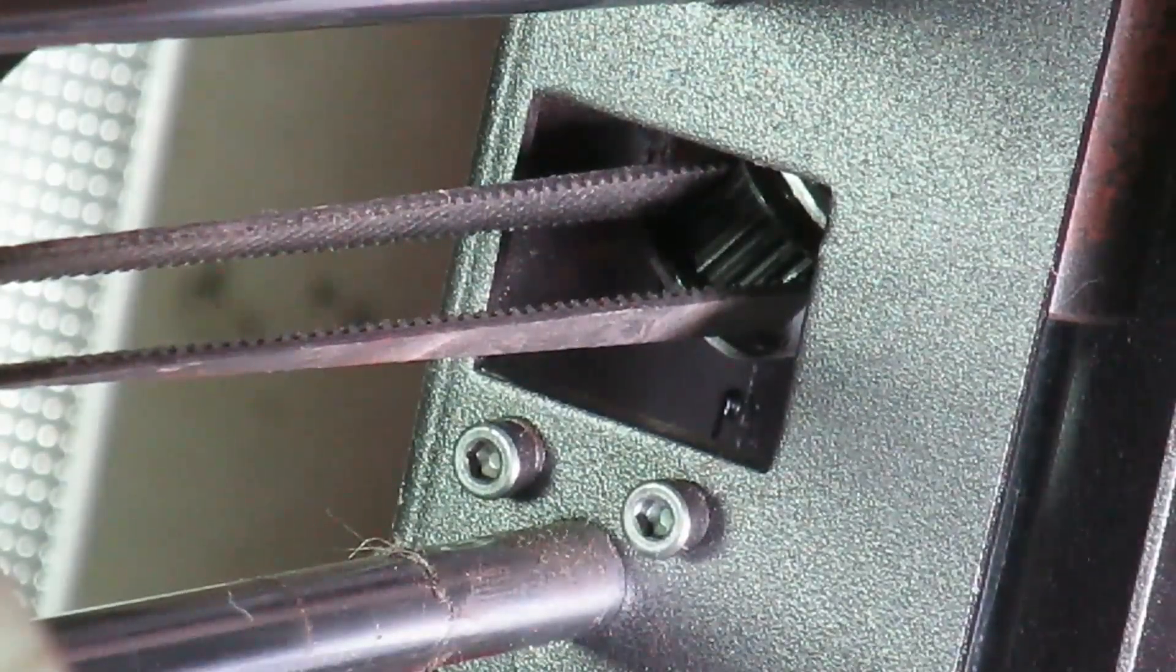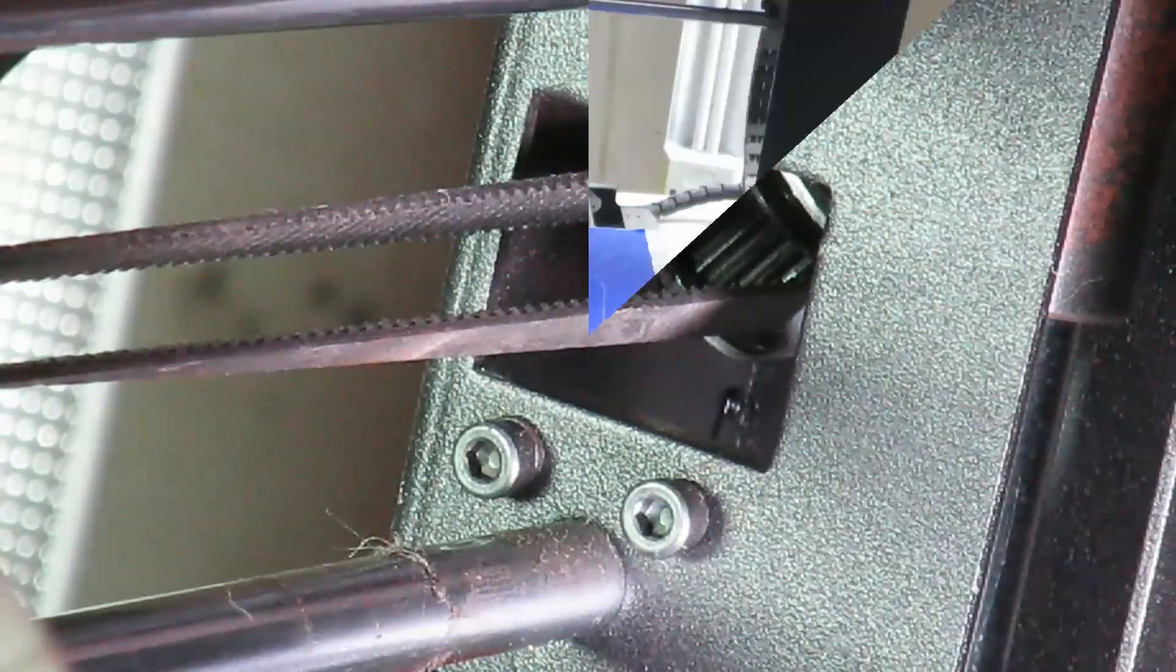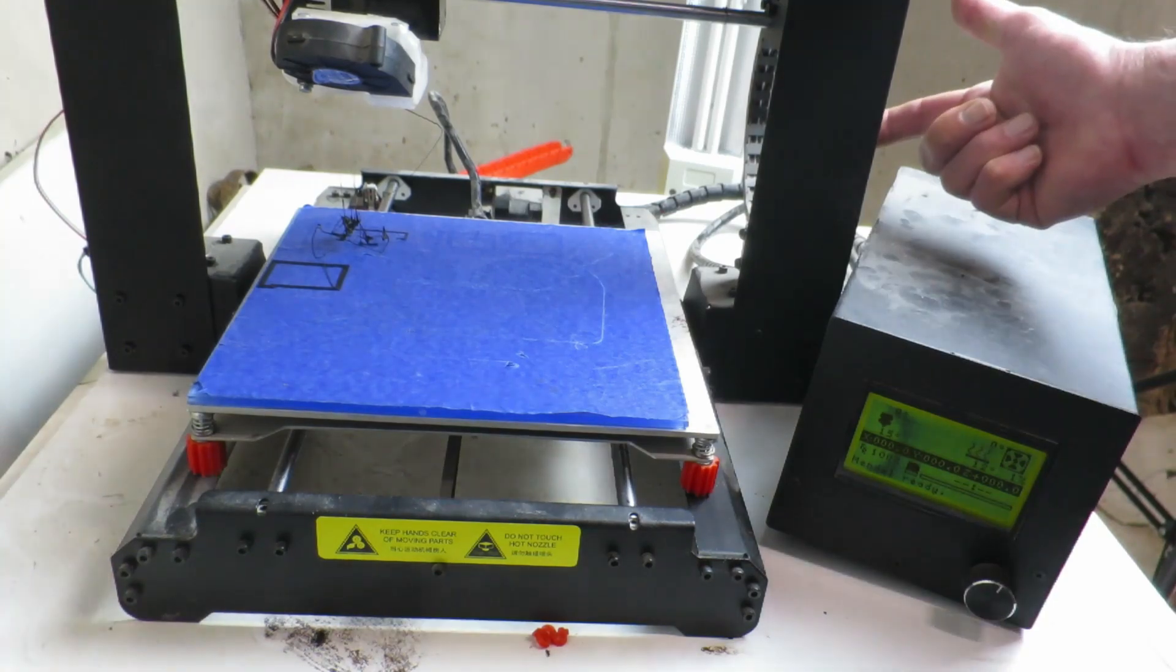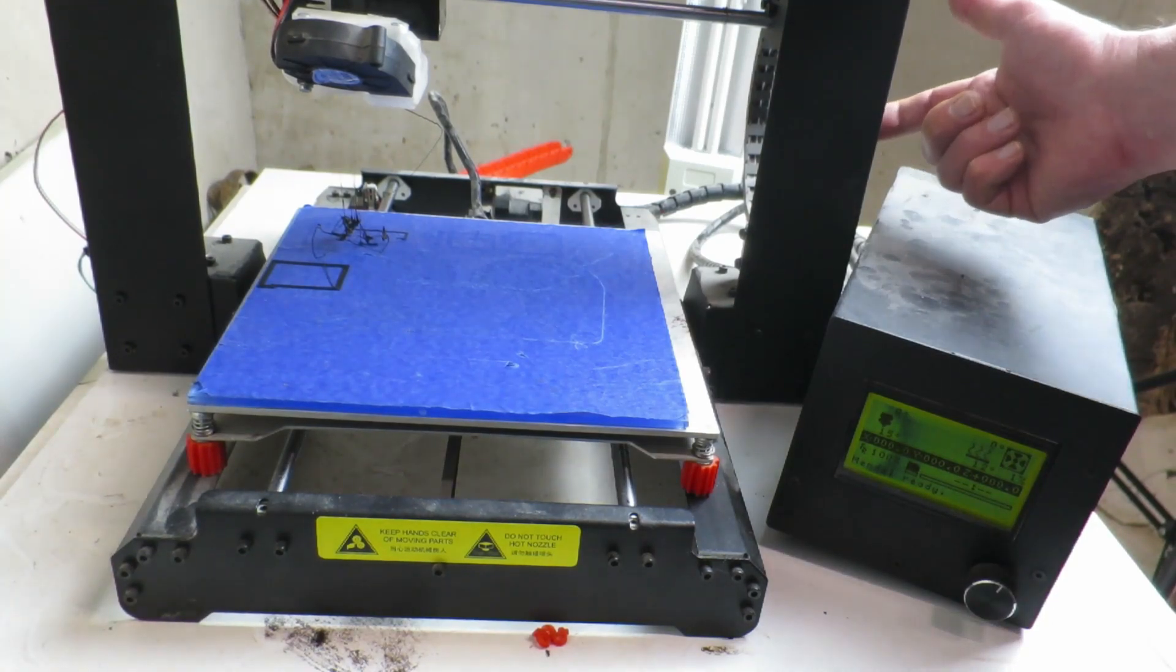So how are we going to get to this bearing to remove it? On this particular 3D printer, which is a Mahlan M150, there are little cutouts that will enable us to get to the bolt that's holding that bearing on if we return the axes to their home position.